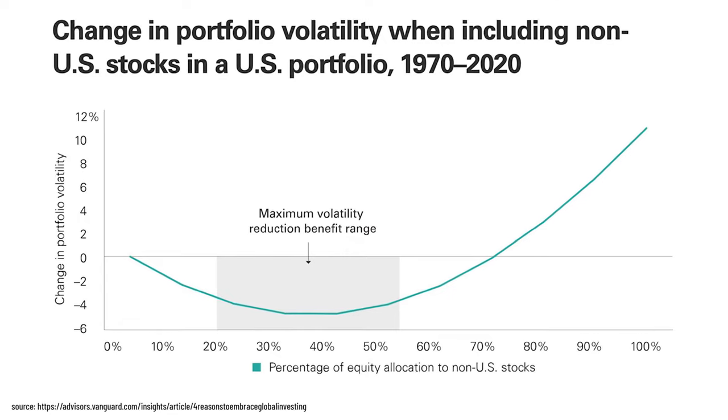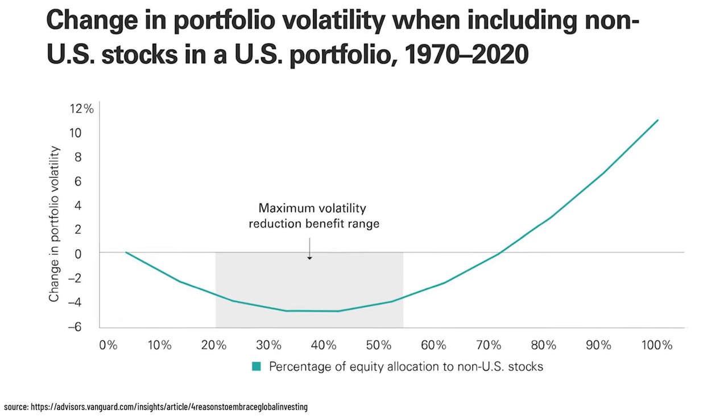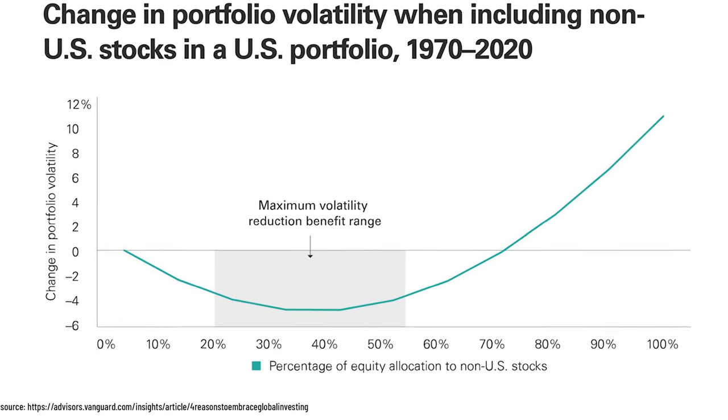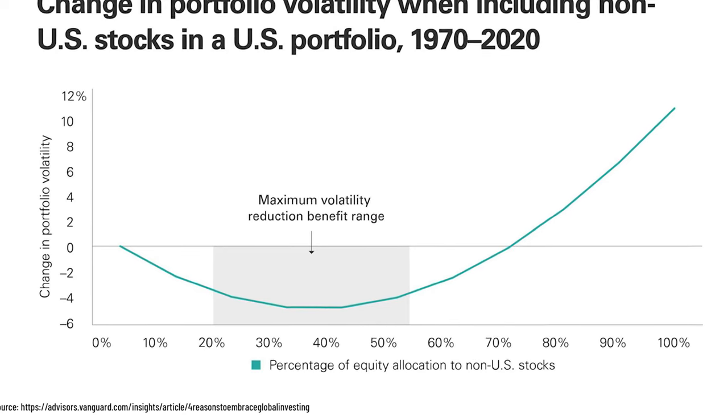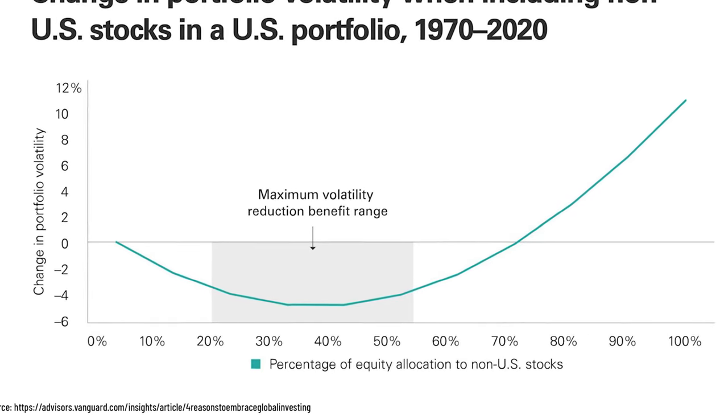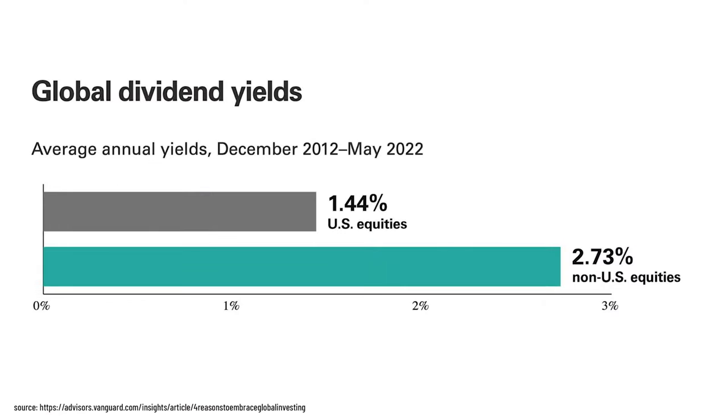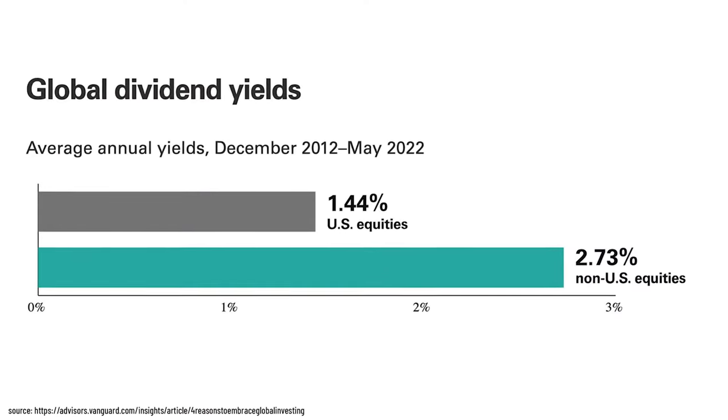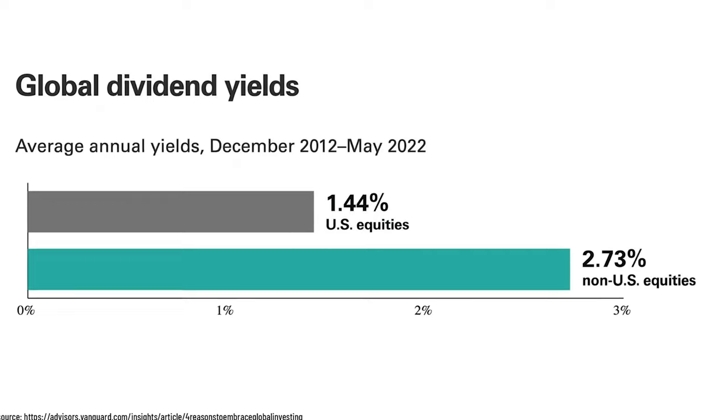In the last 50 years, the sweet spot for the highest volatility reduction was a mix of 40-60 — so being invested 60% in US stocks and 40% in international stocks. Benefit number four: higher dividends. In the last 10 years, international stocks delivered a 1.3% higher dividend yield. That's why it makes sense to invest globally, and that's why all portfolios today are global portfolios.